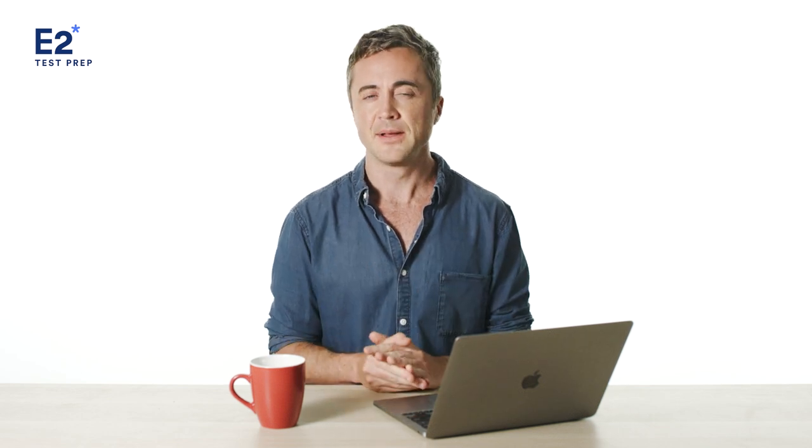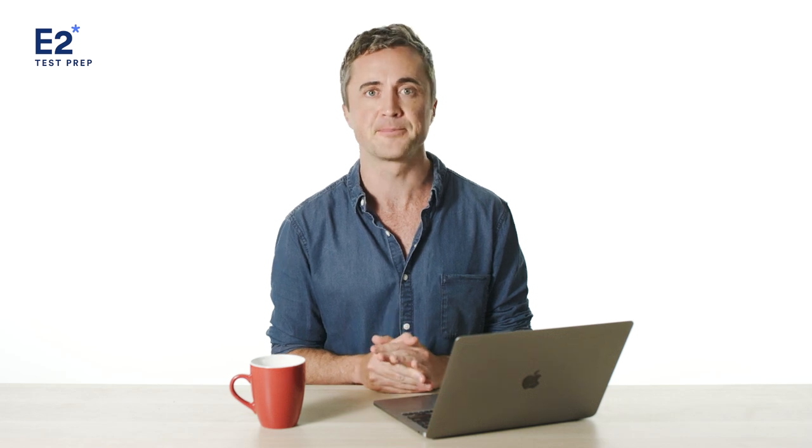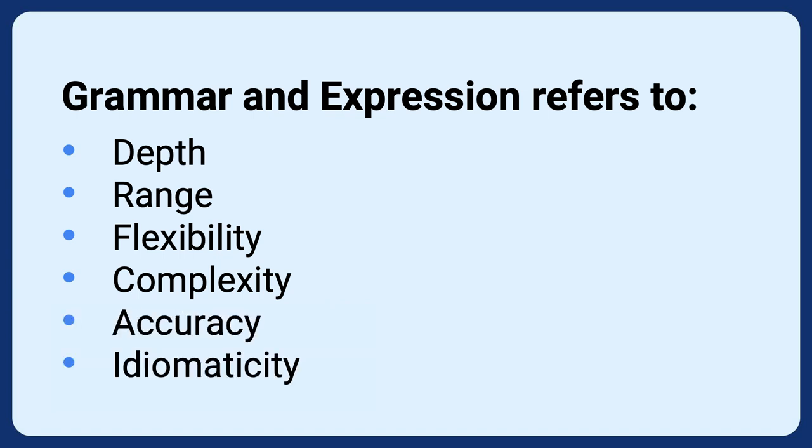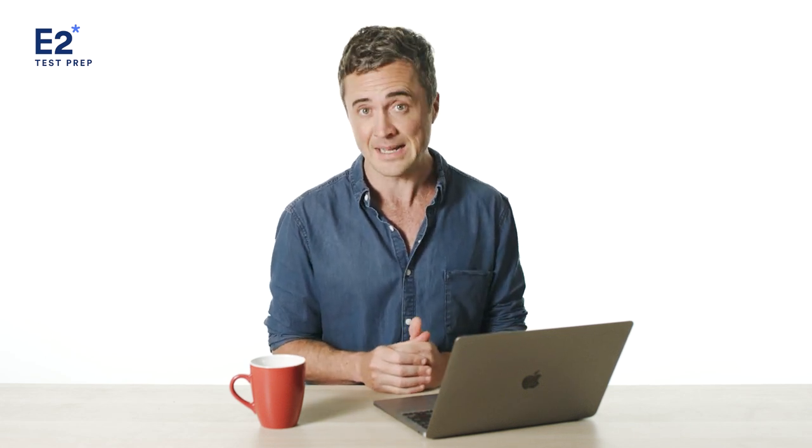Let's discuss the use of grammar and expression in OET speaking. There are actually six parts to grammar and expression: depth, range, flexibility, complexity, accuracy, and idiomaticity. If you have a really complete ability to use English grammar and vocab, what you say will be unambiguous — interpretable in only a single way. If your grammar and expression are not so good, what you say might be ambiguous and misinterpreted. For example: 'Take the tooth out of the mouth and fix it' — fix what, the tooth or the mouth? The sentence is grammatically correct but ambiguous due to poor pronoun reference.